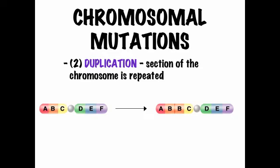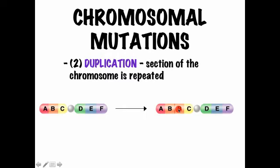Then there's duplication, where a section of the chromosome is repeated. For example, if gene B is duplicated, you've got A, B, B, C, D, E, F. You might think that's not a big deal since all the genes are still there, but your body just knows where genes are positionally. So it assumes the second B is C, and tries to use it to make the protein for C — which won't work.